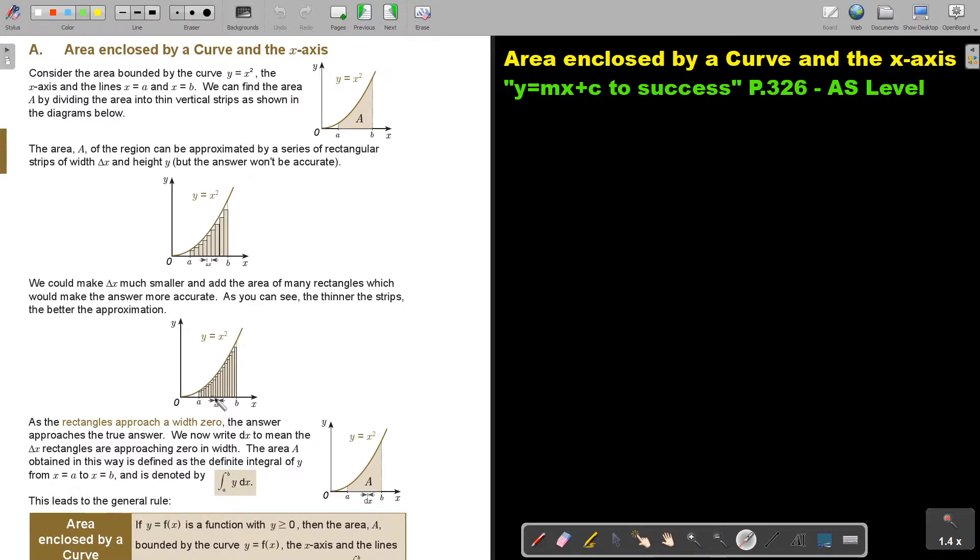We now write dx to mean the delta x rectangles are approaching zero in width. So we are trying to make that width striving to zero.